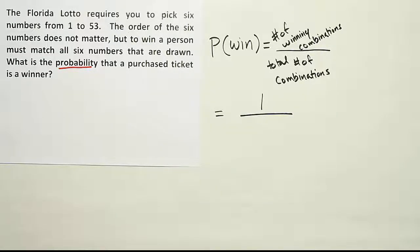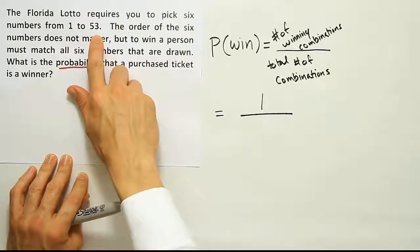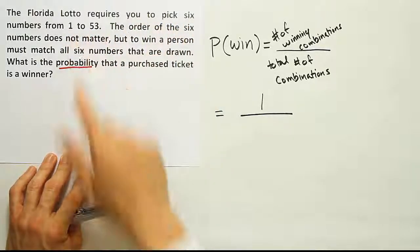So at that point, I have to think, I wrote combinations here. Is that proper to write combinations? Or am I just using the word loosely the way people often do in the English language? Or is this actually a mathematical combination? Well, let's see. I have a large set of numbers, 53 total numbers, and I'm required to pick six numbers from the set of 53.